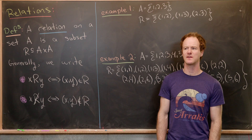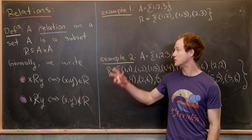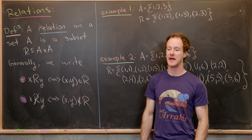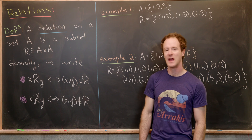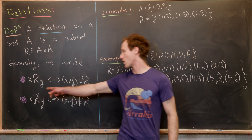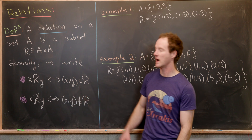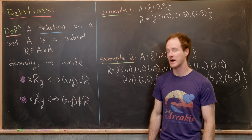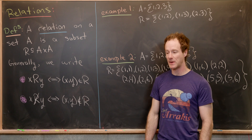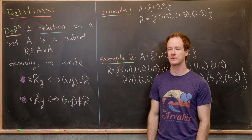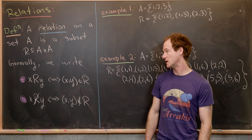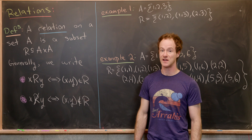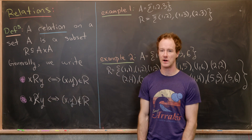To abstract that to a general set, a relation on a set A is a subset R of A × A — that is, the Cartesian product of A with itself. Notationally, we generally write x R y instead of (x, y) ∈ R, and x ̸R y instead of (x, y) ∉ R. Often we use the standard notation for the relation — an equal sign for equality, ≤ for less than or equal to, a subset symbol for the subset relationship, and so on.